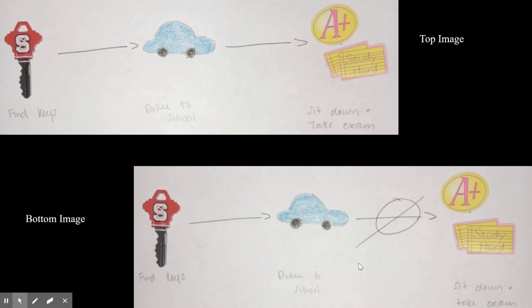Say you have to drive to school to take an exam. To be able to take your exam you have a couple steps to go through first. First you need to find and get your keys. Then you have to get in the car and drive to the testing center. Finally you need to sit down and take your test. This pathway is demonstrated in the top image.